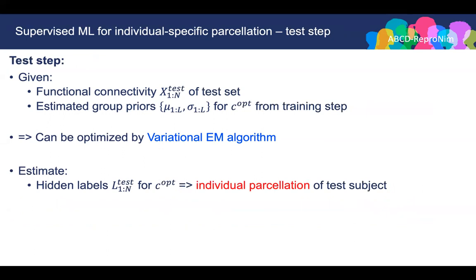Now in the test step, given the functional connectivity X-test and the estimated group priors at C-optimal, we can estimate the hidden labels L-test. In this way, we are able to obtain the individual parcellations of test subjects.